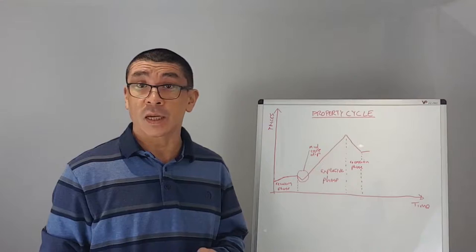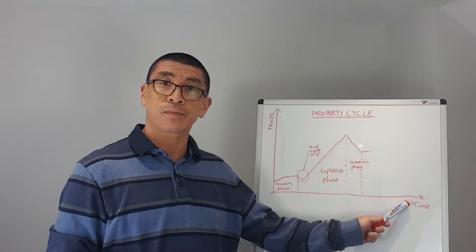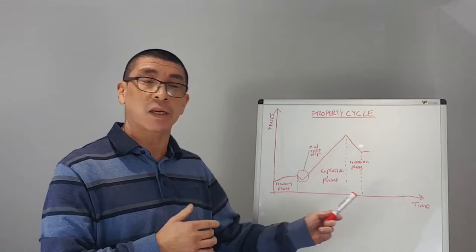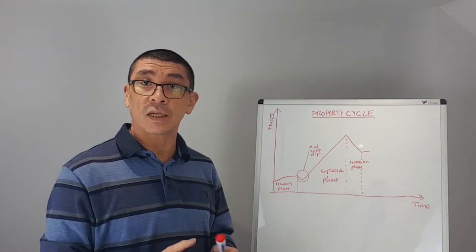I've got a graph of the property cycle. On the y-axis is the prices going up this way, and on the x-axis is the time. The price amount is not important and the time in number of years is not important. It's the shape of the graph that is going to be important, and I will go in detail.